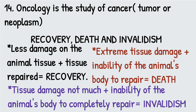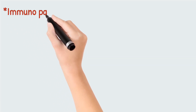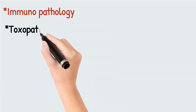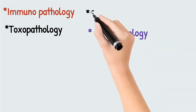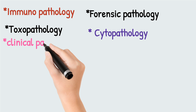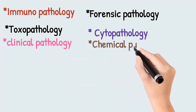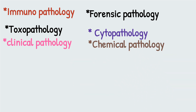We are done with the common terminologies of veterinary medicine — these are not all the terms used in veterinary pathology, but they are the most common ones you will encounter. Now let's look at some branches of veterinary pathology: immunopathology, cytopathology, forensic pathology, histopathology, chemical pathology, and clinical pathology.